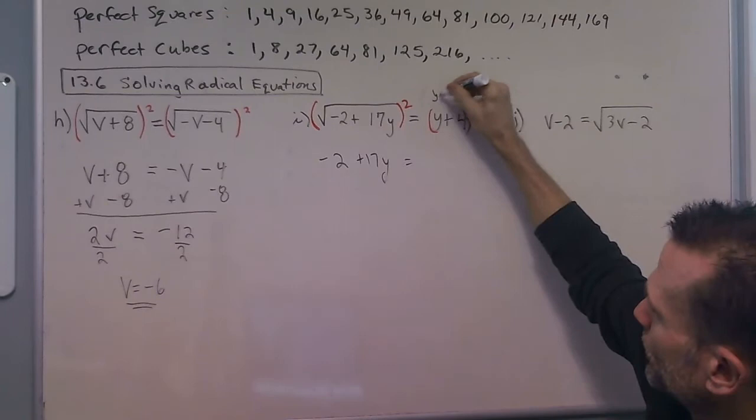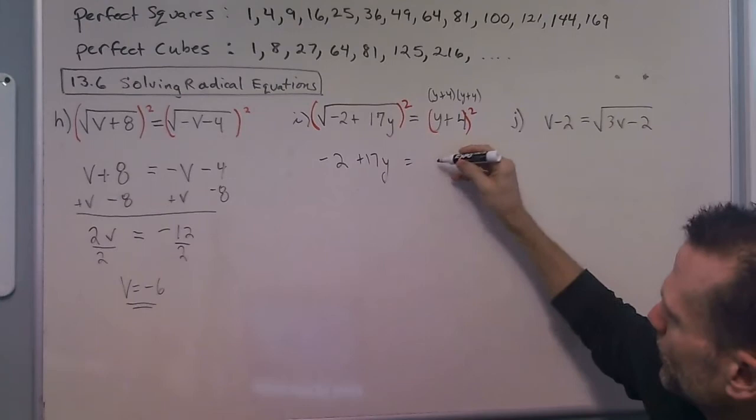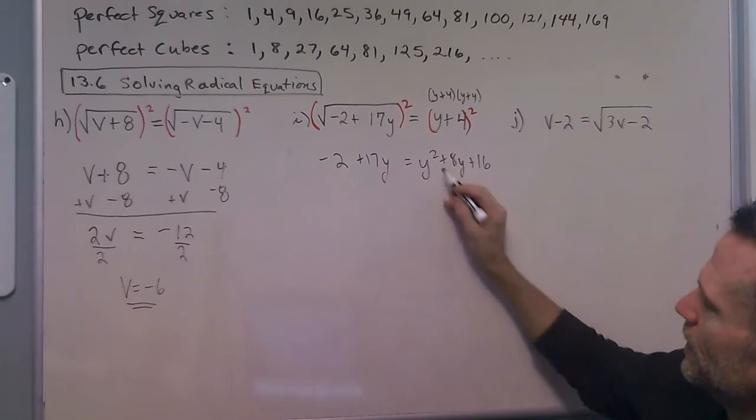But on the right side we have to remember that when we square a binomial, we actually have to take it times itself, and we end up getting y squared plus 8y plus 16.